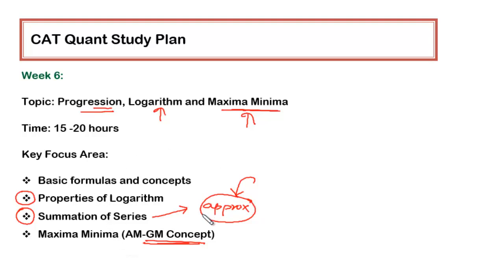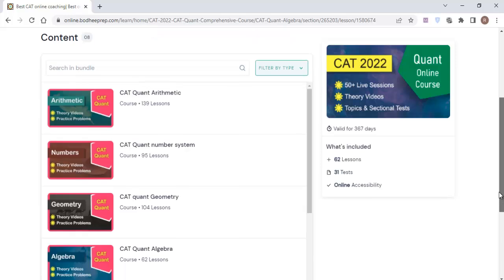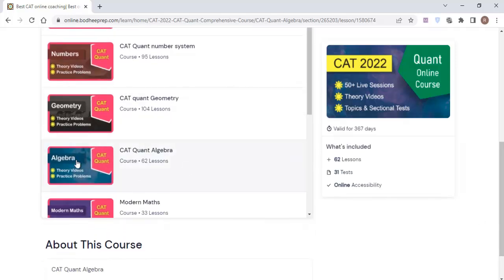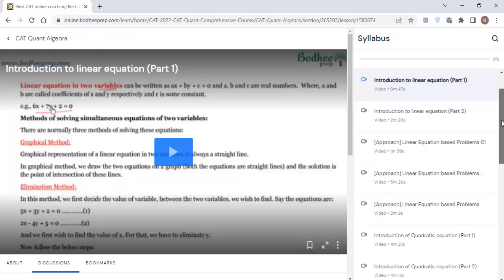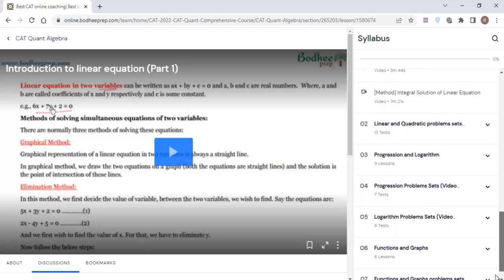Let me show you where you'll be finding these particular topics from the course and what you have to do. When you are in this particular course, you have to go to the algebra section. Click this folder, and once you go inside it, you'll find the topics from progression and logarithm.